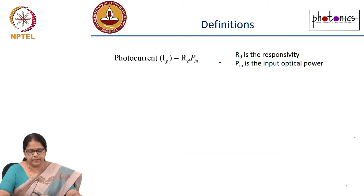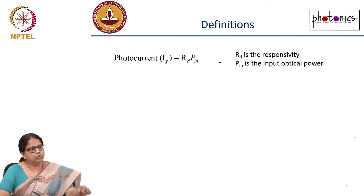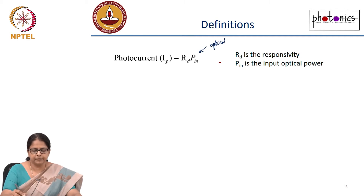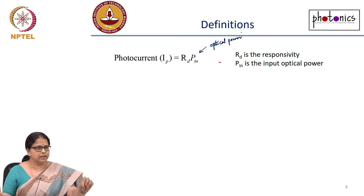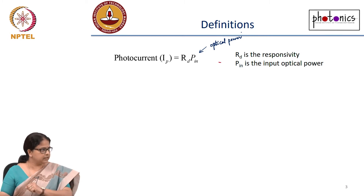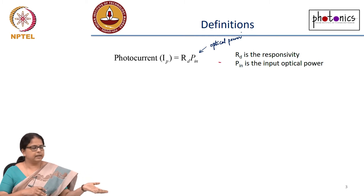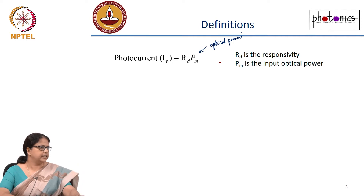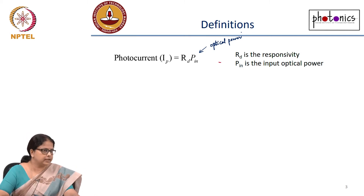Now there are some basic definitions. One is the responsivity of the semiconductor. If you are inputting a certain optical power, how much current is generated? The photodetector is a transducer: input is optical power, output is electrical current. The conversion factor is the responsivity R_d — output current divided by input power — and this is characterized for a given photodetector.